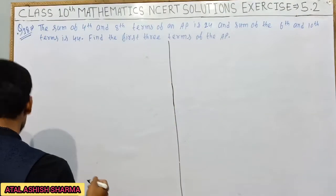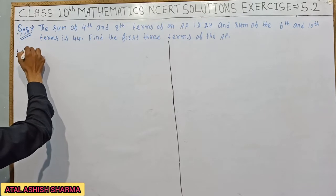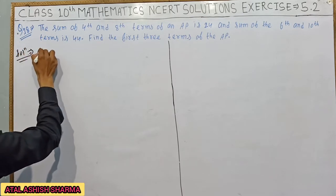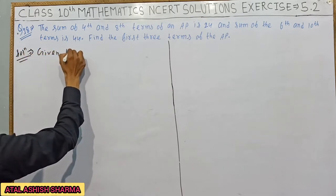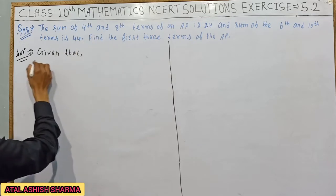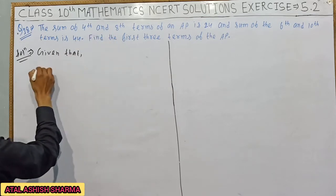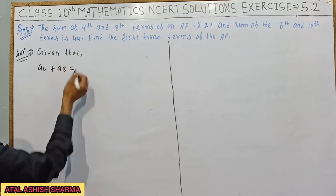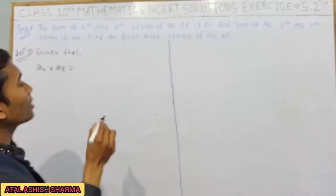First, given that A4 plus A8, 4th and 8th term sum, that is 24.